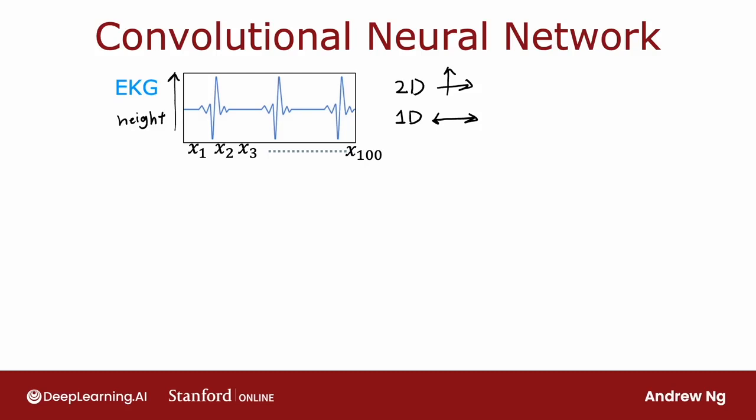And the learning task is, given this time series, given this EKG signal, to classify, say, whether this patient has a heart disease or some diagnosable heart condition. Here's what a convolutional neural network might do. So I'm going to take the EKG signal and rotate it 90 degrees to lay it on the side. And so we have here 100 inputs, x1, x2, all the way through x100.